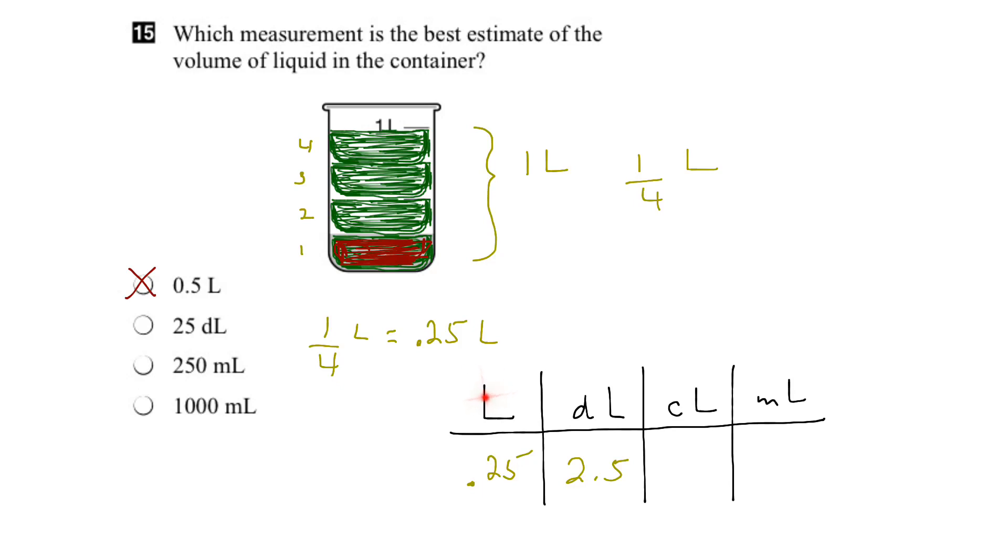And if I want to go from liters to centiliters, I go one, two spaces, so I move this decimal two places, one, two to the right, and that would give me 25 centiliters.